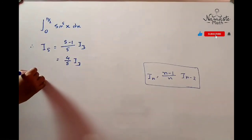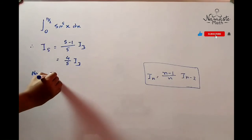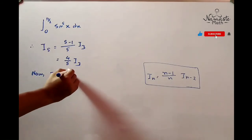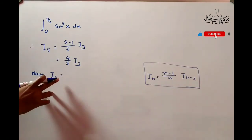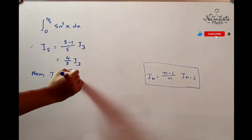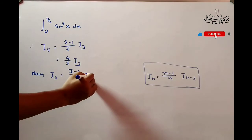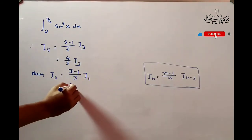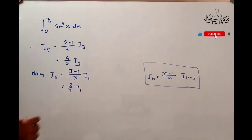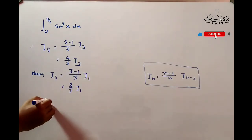For I3 it becomes (3-1)/3 times I(3-2), which is I1. That's 2/3 of I1.